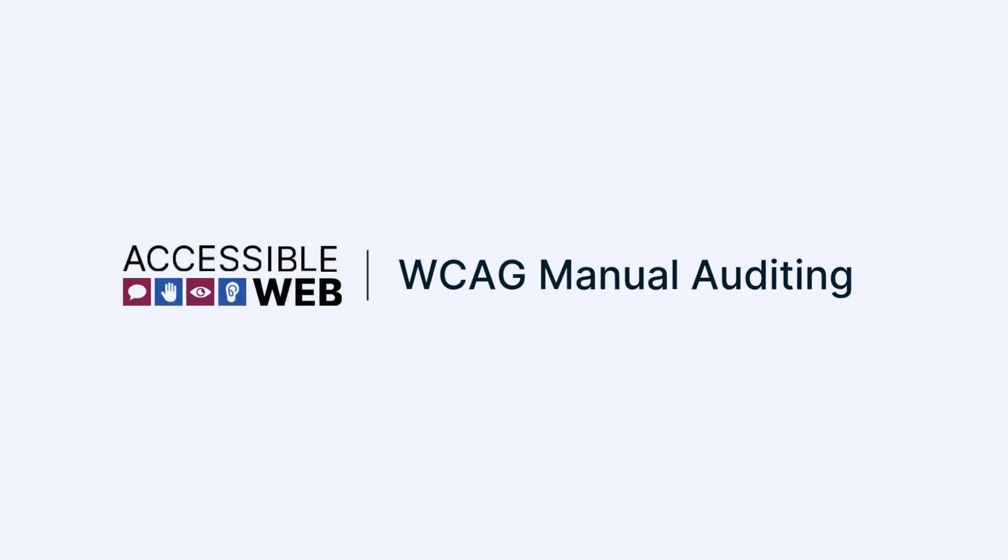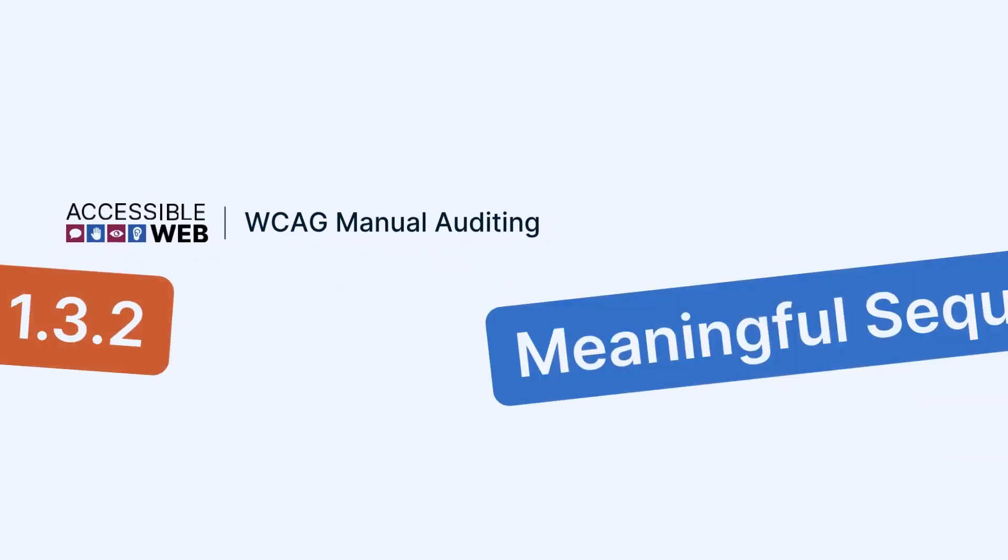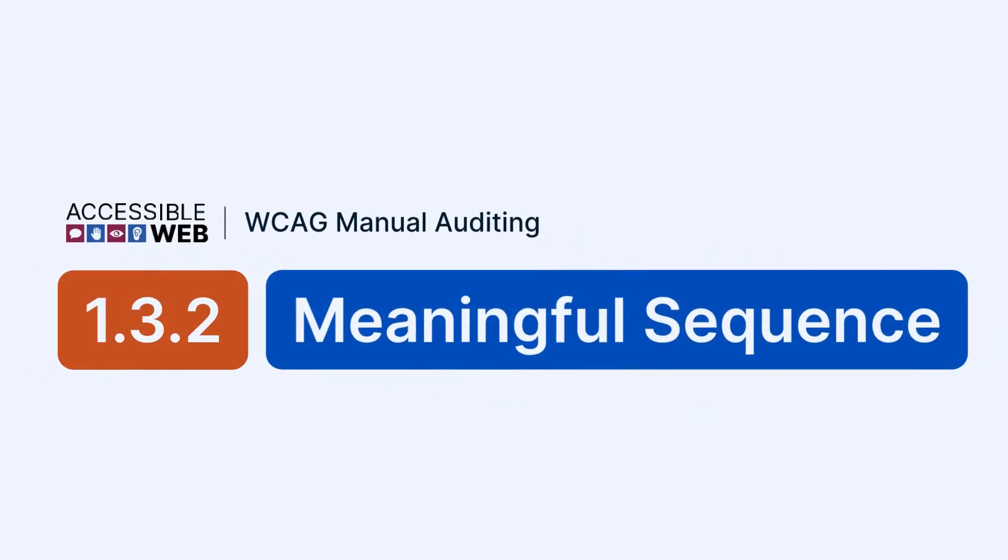Accessible Web. WCAG Manual Auditing. Success Criterion 1.3.2, Meaningful Sequence. In this video, we'll explore how to check whether content is presented in a logical, readable order, especially when visual styling is removed. Let's jump in.